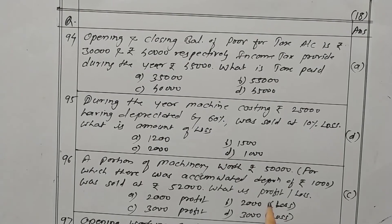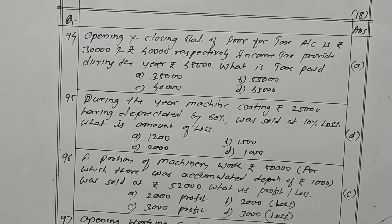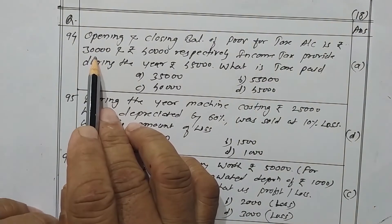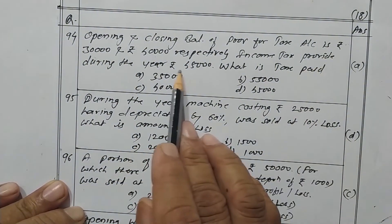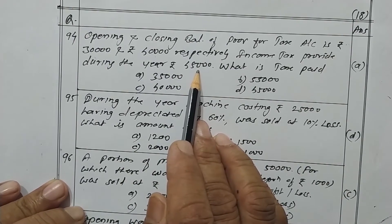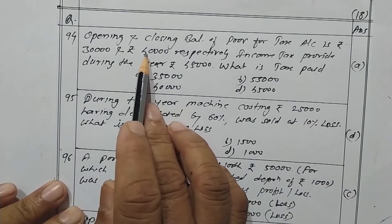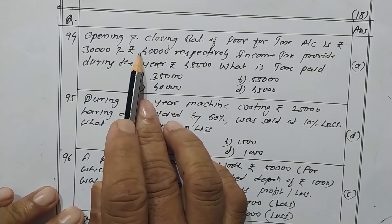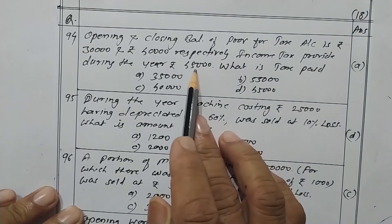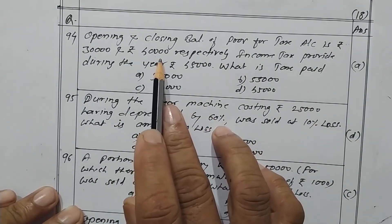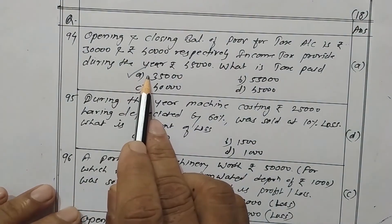Opening and closing balance of provision for tax is rupees 30,000 and rupees 40,000 respectively. Income tax provided during the year is rupees 45,000. Difference is rupees 10,000; current year's tax provision is 45,000, so tax paid is 45,000 minus 10,000, giving rupees 35,000. Option A is the correct one.